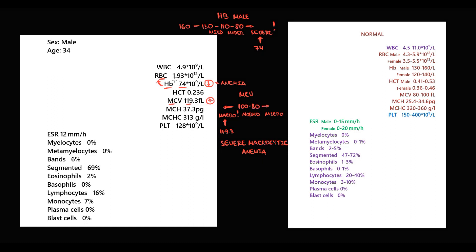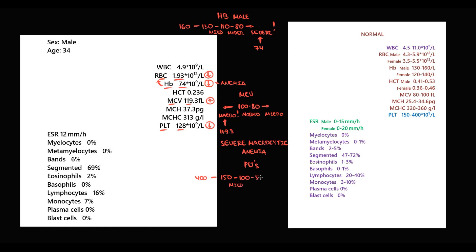Usually when hemoglobin is low, red blood cells are also low. In this case red blood cells are 1.93, which is lower than normal. The next value is platelets: 128, which is lower than normal. For platelets, we need to know two values: 150 and 100. From the lower limit of normal to 100 is mild thrombocytopenia, from 100 to 50 moderate, and lower than 50 is severe. In this case platelets are 108, so it's mild thrombocytopenia.